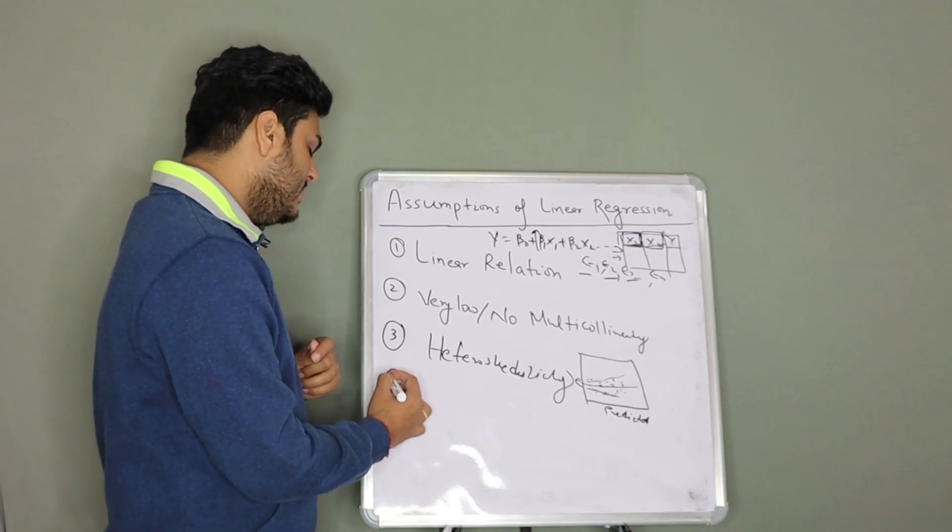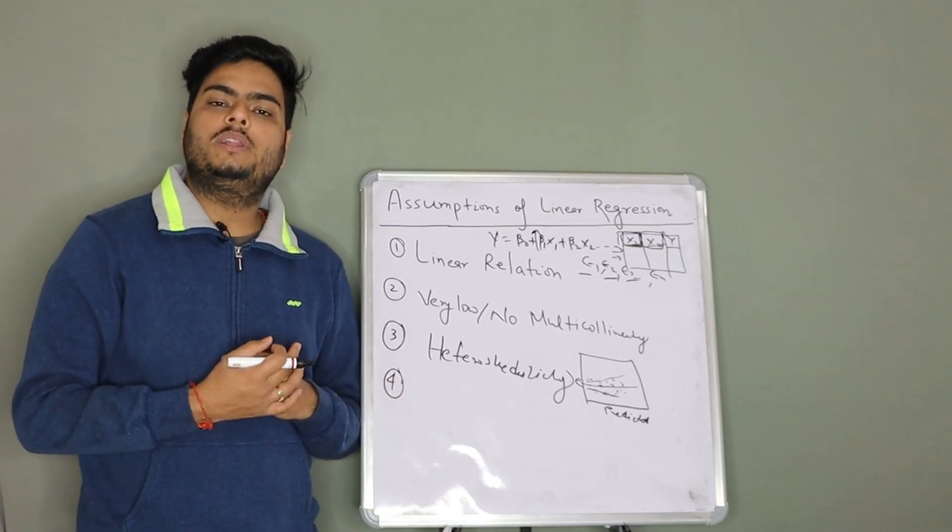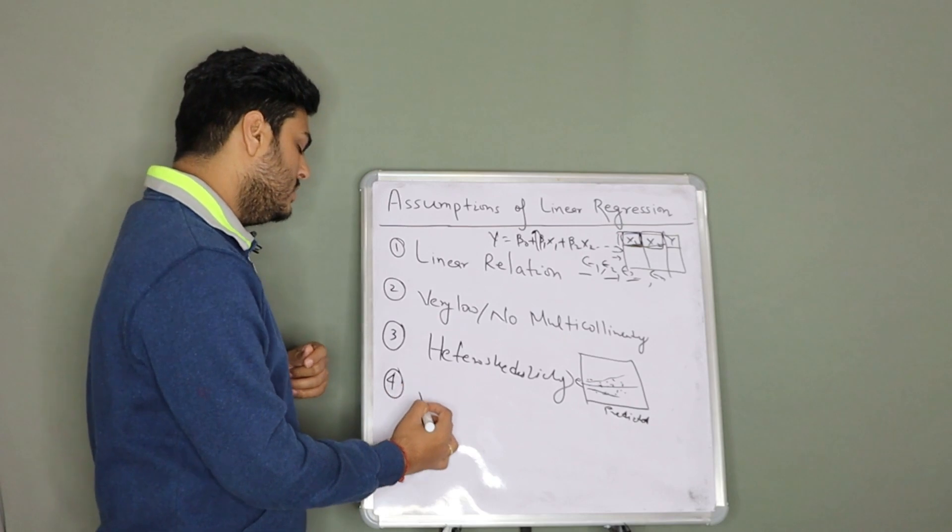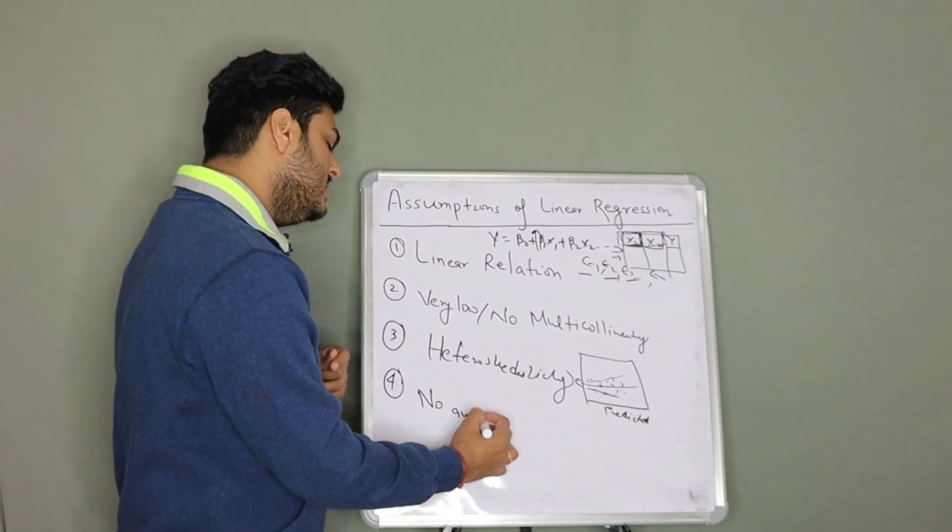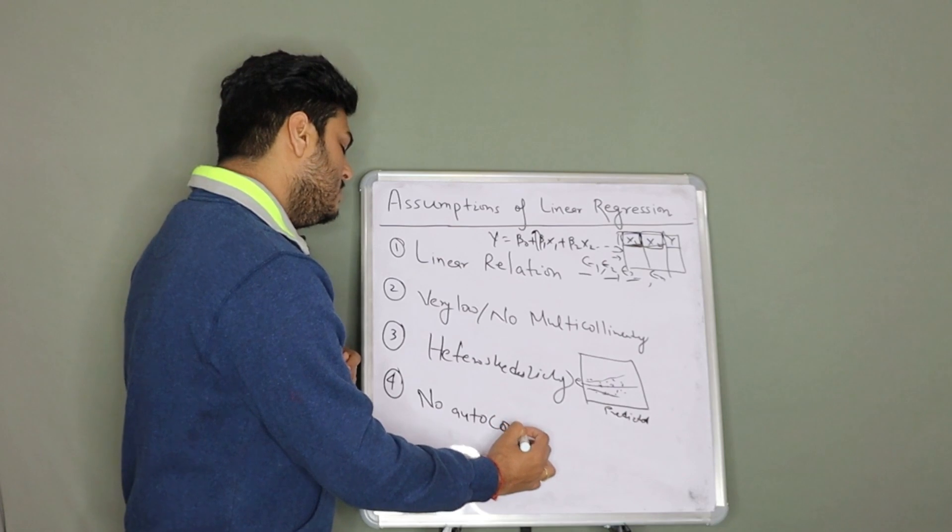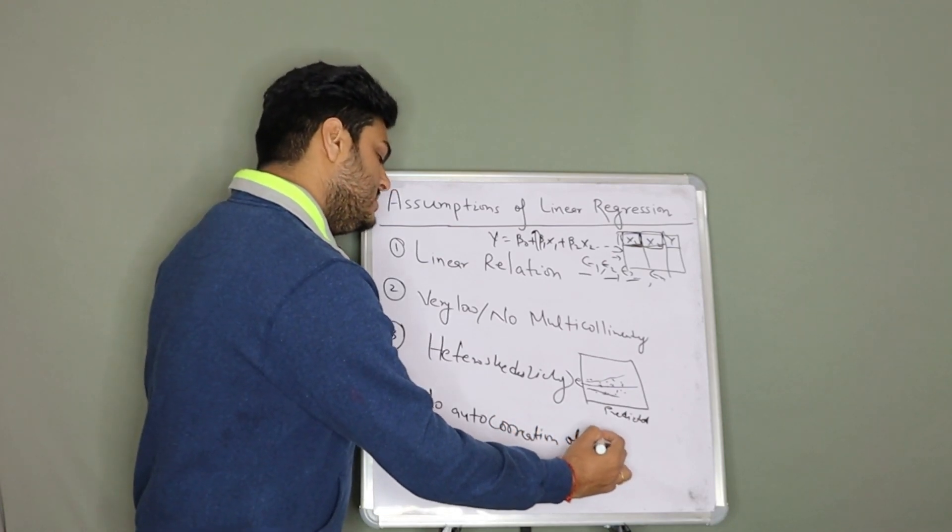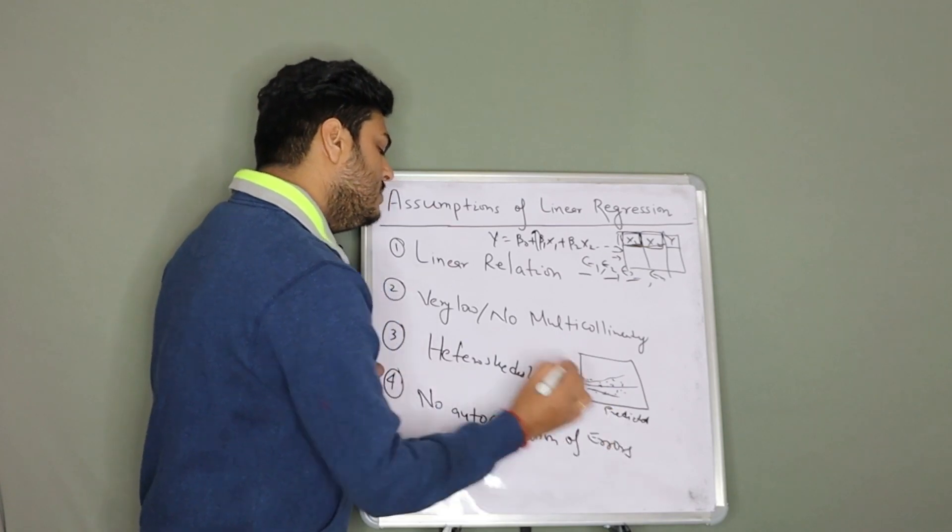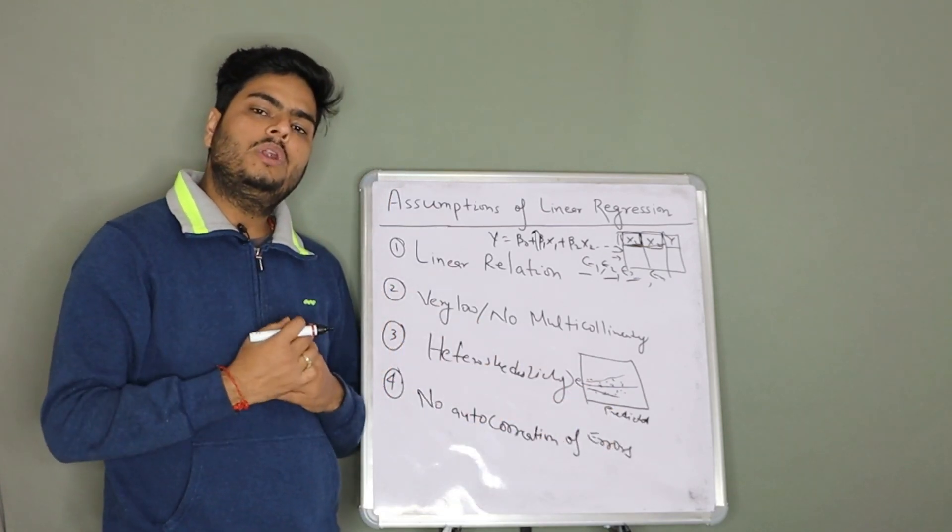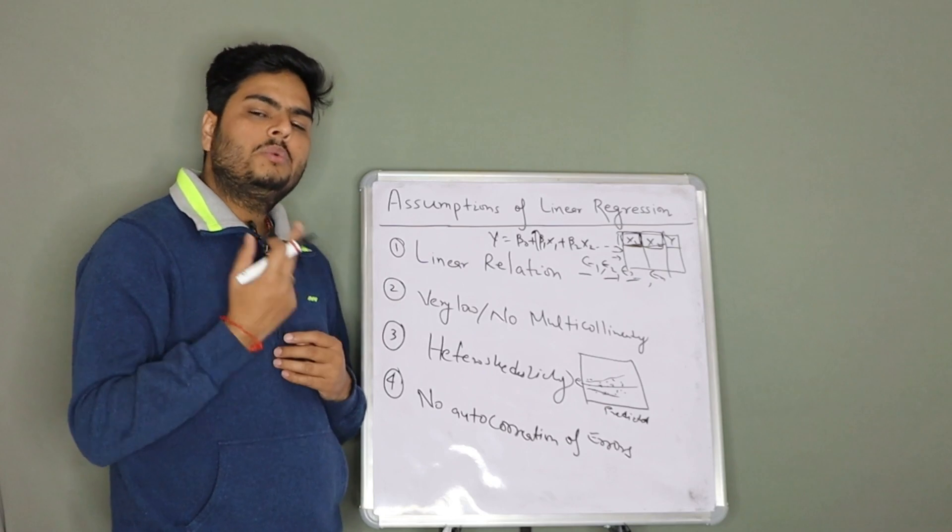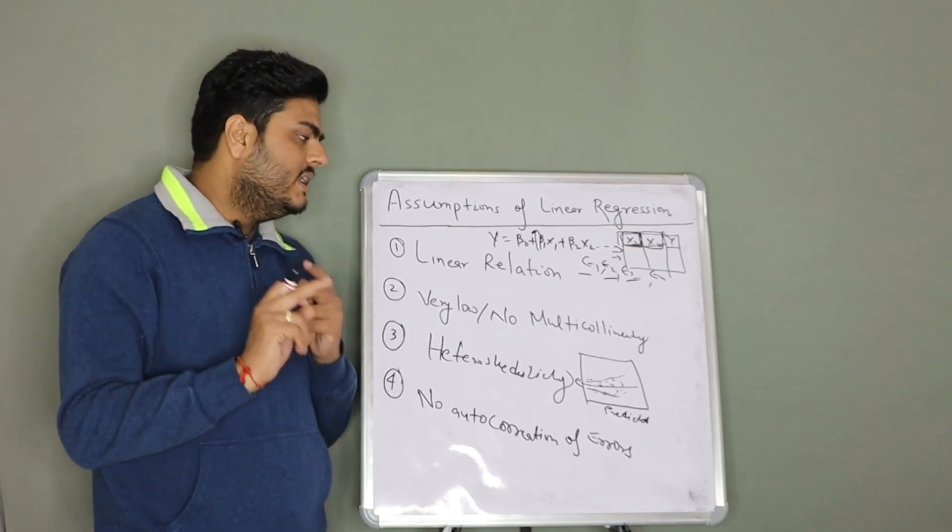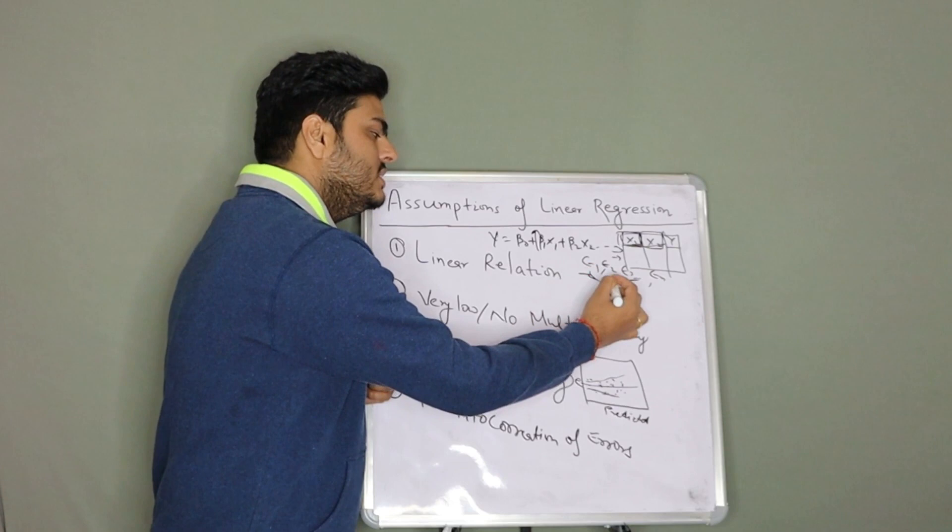Assumption number four is there should not be any autocorrelation between the errors. No autocorrelation, meaning correlation with each other. No autocorrelation of error terms. Which means that E1 should not be correlated with E2, E2 should not be correlated with E3, and so on. So errors should not be related to each other.